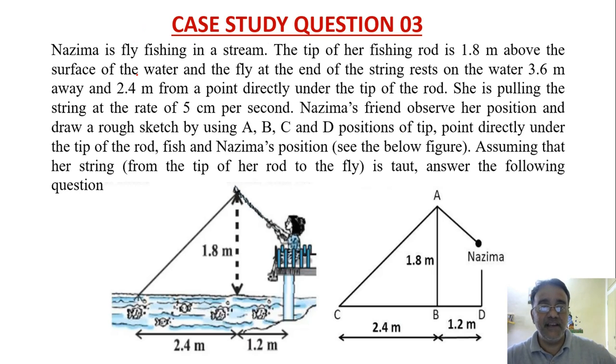Nazima is fly fishing in a stream. The tip of her fishing rod is 1.8 meter above the surface of the water and the fly at the end of the string rests on water 3.6 meter away and 2.4 meter from a point directly under the tip of the rod. She is pulling the string at the rate of 5 centimeter per second. Nazima's friend observes her position and draws a rough sketch using A, B, C, D positions of tips.